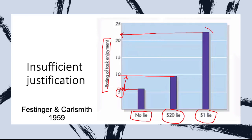Cognitive dissonance explains this by saying that in the $1 condition, you have insufficient justification for lying. You lied to these people for $1 telling them the experiment was fun. You have a behavior and an attitude that clash — you lied even though you didn't like the experiment. To get rid of the cognitive dissonance, you tell yourself you actually kind of enjoyed it; it was somewhat therapeutic to turn those packs for 30 minutes. By changing your attitude, you get rid of the dissonance. If you had sufficient justification — you lied but got a lot of money — you don't need to change your attitude.